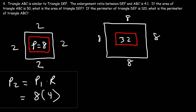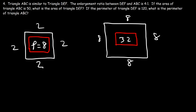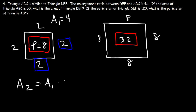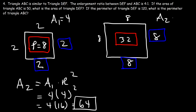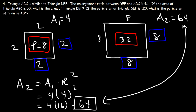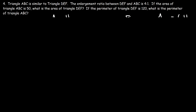Now for area: area of square 1 is 2 times 2 equals 4. Using the formula A2 equals A1 times R squared: A1 is 4, R squared is 4 squared equals 16, so 4 times 16 equals 64. Checking directly: 8 times 8 equals 64. Both methods match, confirming the area formula works.